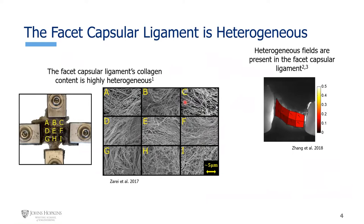What we know about the healthy ligament is that its properties are highly heterogeneous. If we look at nine different regions using SEM or biochemical composition analysis, the fibers are not all isotropic — they're not all aligned in the same direction, and some regions have denser collagen while others have less. If you take the ligament while still on the bone or detach it and biaxially load it, you get strain fields that are highly heterogeneous, with some regions experiencing lower strain and others higher strain. The tissue definitely has regional variability.